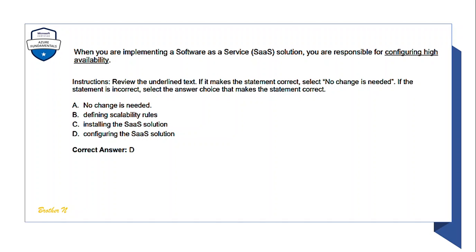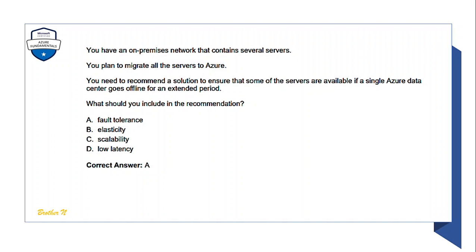Question: When you are implementing a Software as a Service (SaaS) solution, you are responsible for configuring high availability. Review the underlying text — if correct, select 'No changes needed'; if incorrect, select the answer choice that makes it correct. The correct answer is D: configuring the SaaS solution — not configuring high availability.